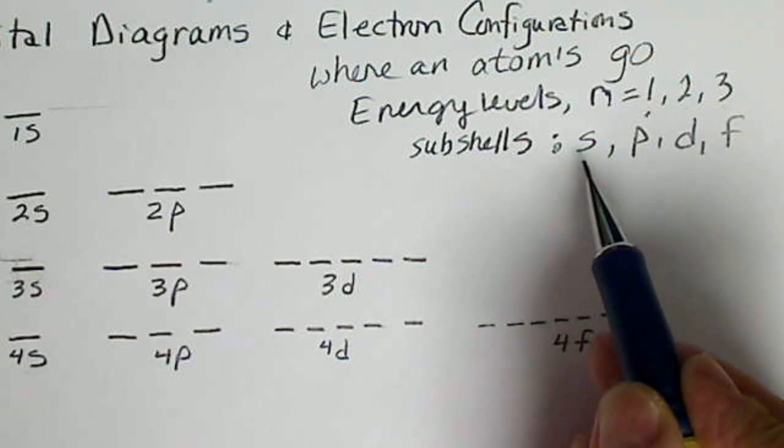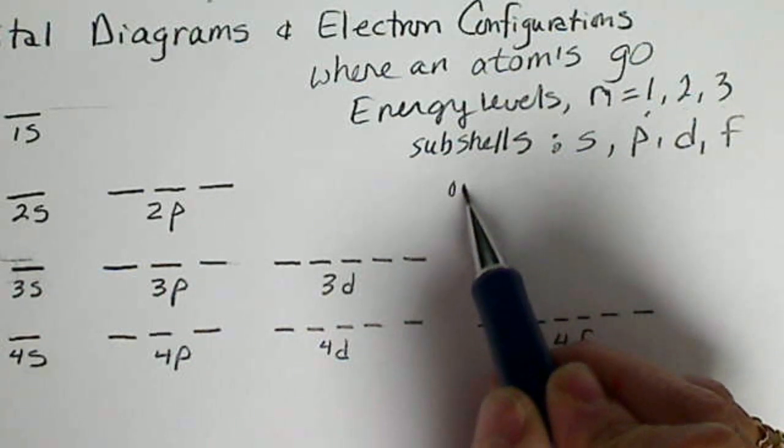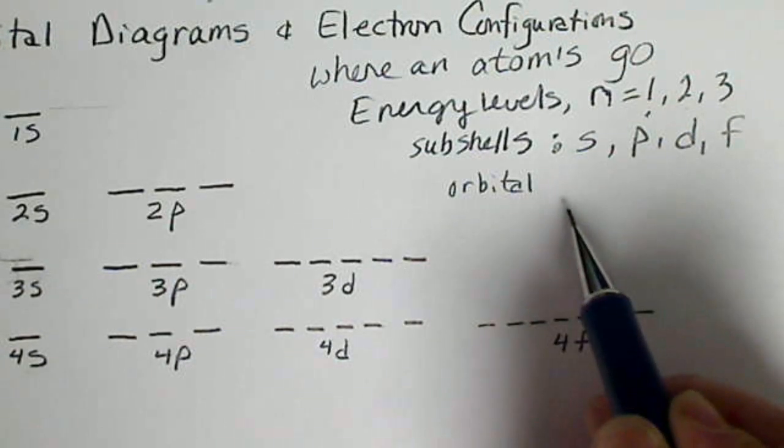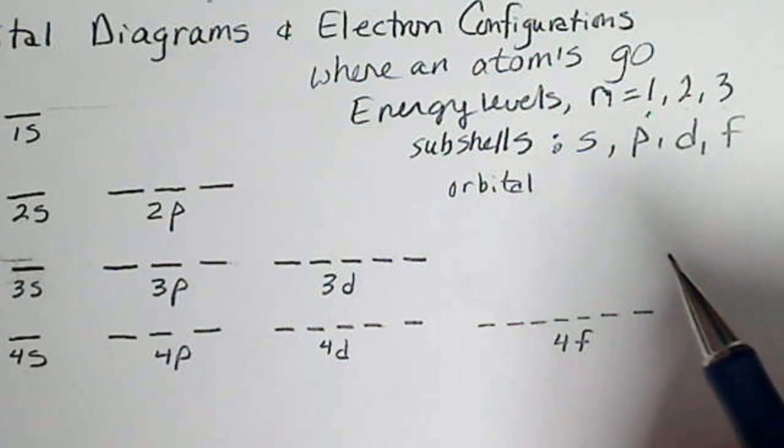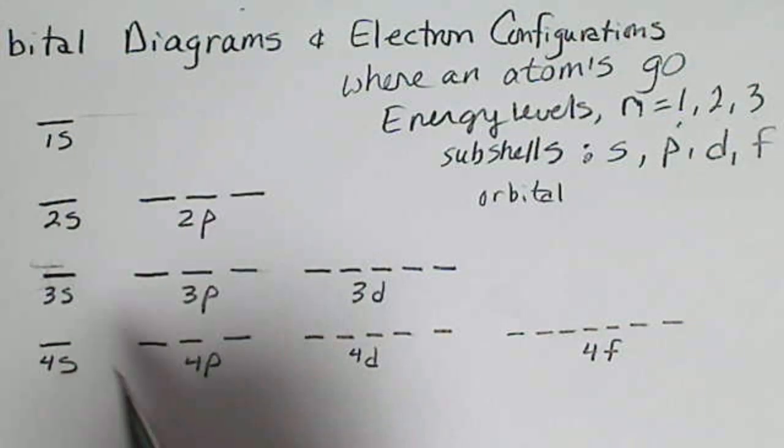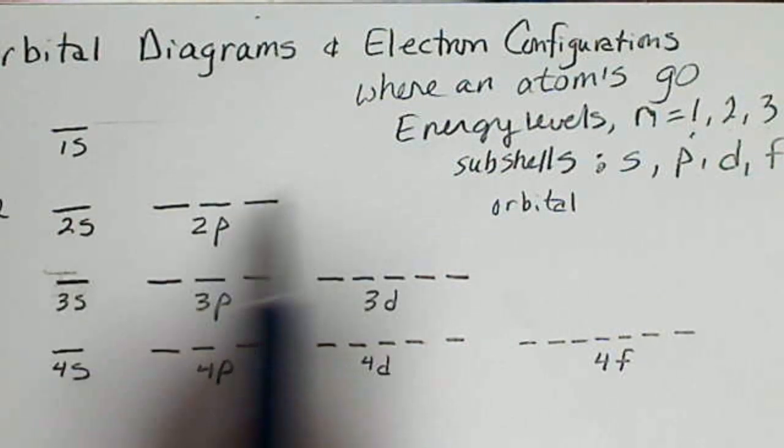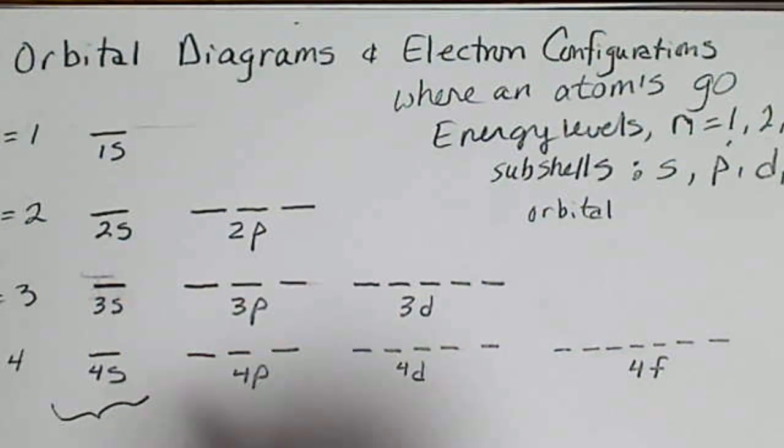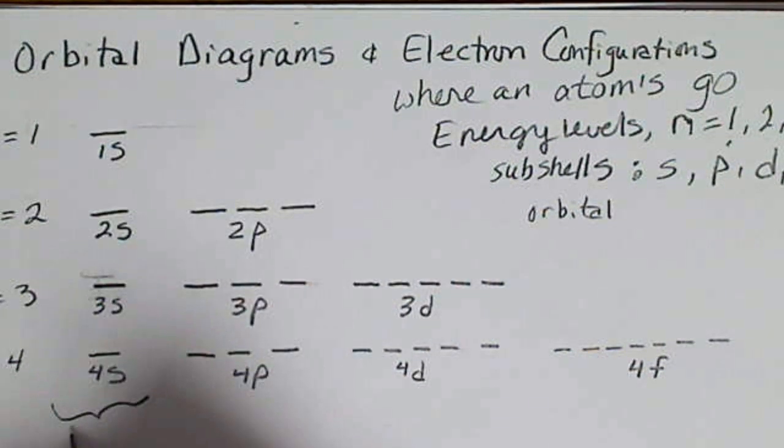And then the orbitals are actually the number of places where the electrons can be found. So if we look here, the energy levels go across, and then this group...